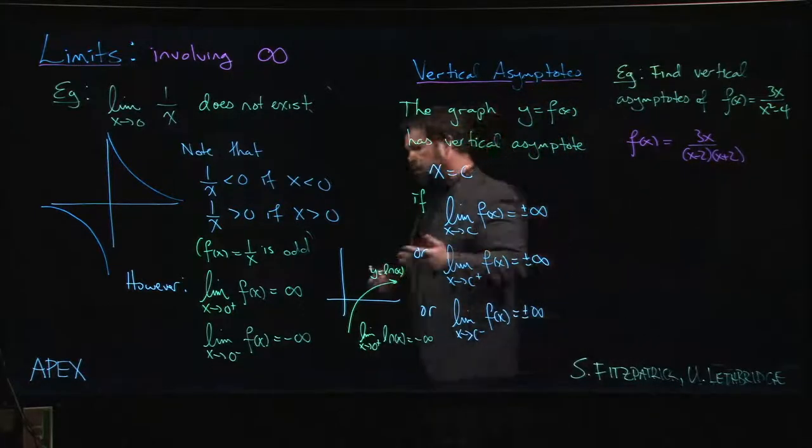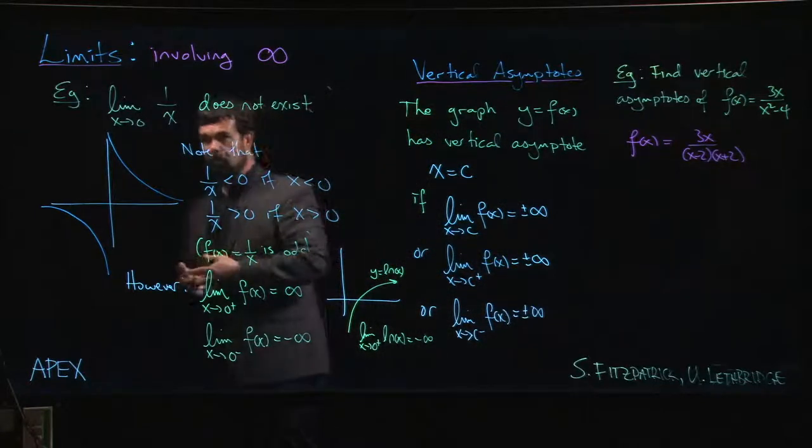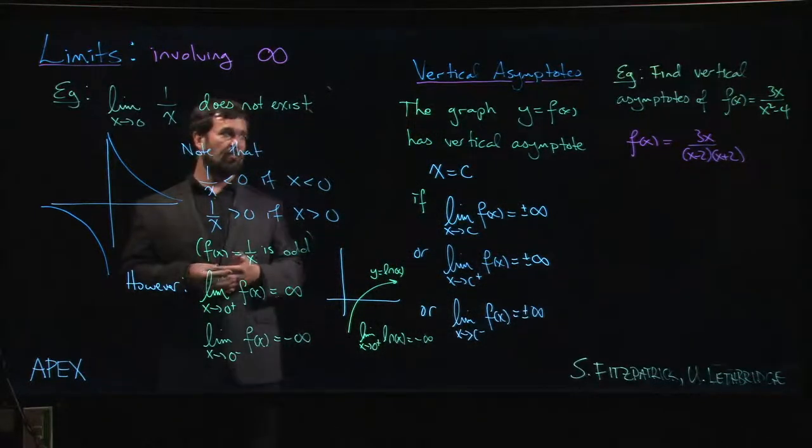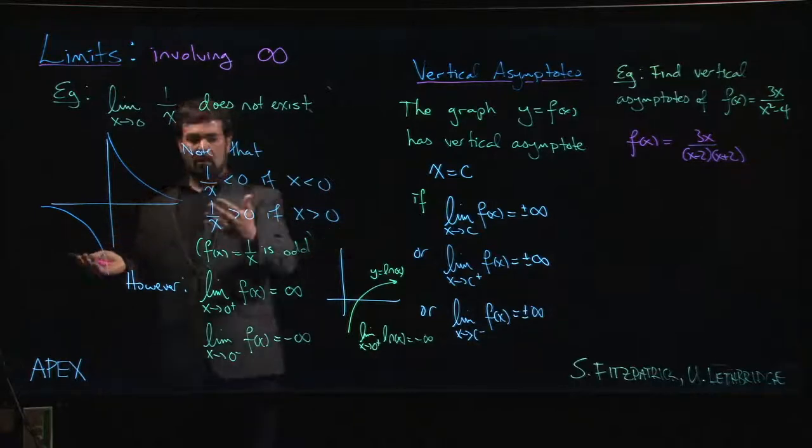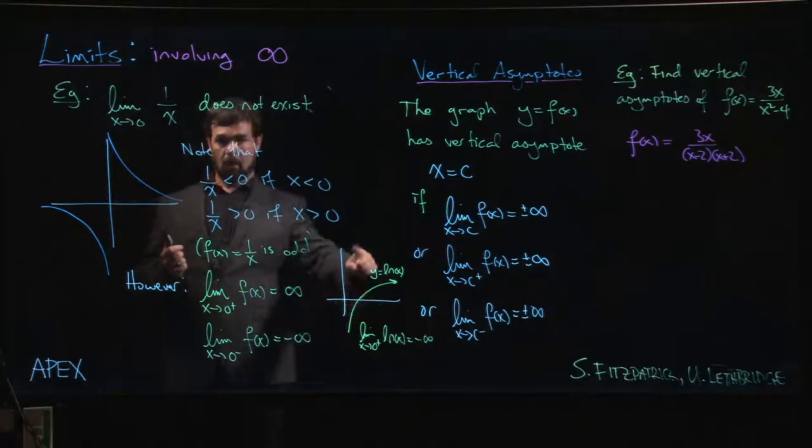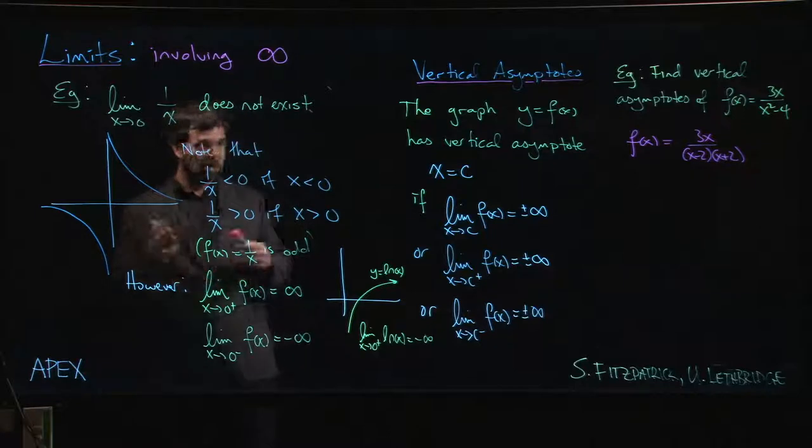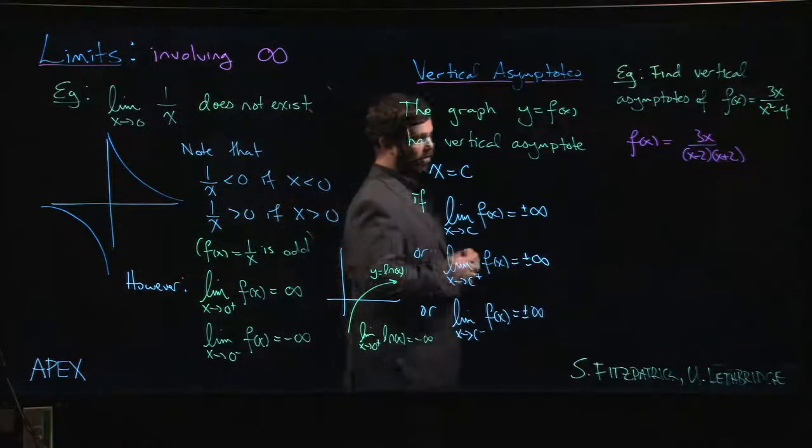So you probably have the idea by now if you've done a few of these examples involving vertical asymptotes that the key feature in a vertical asymptote, aside from maybe oddball examples like the natural log, the key feature that you're looking for is division by 0.